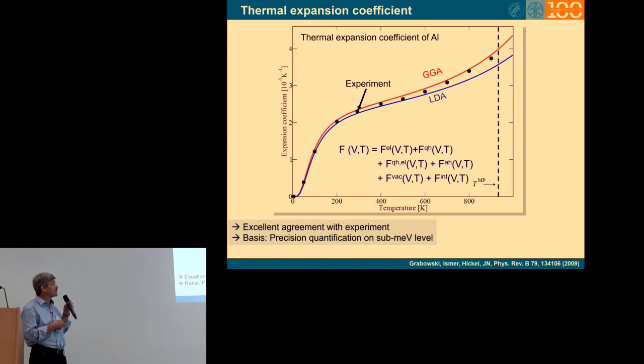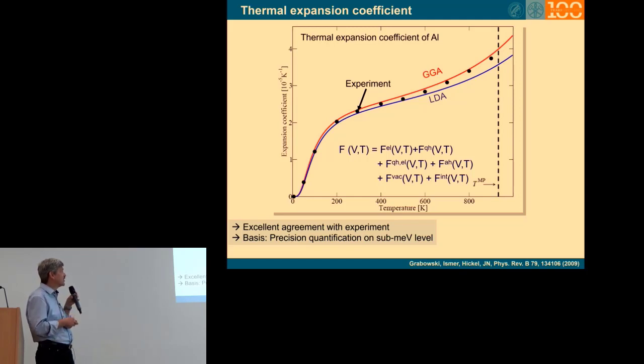And what's also quite consistent, what we find is that LDA and GGA, and this is PBE-GGA, form something like an upper and a lower bound for these type of properties. But for all properties, if you go to the band gap, it's something very different. But for thermodynamic quantities, we quite systematically find this behavior.